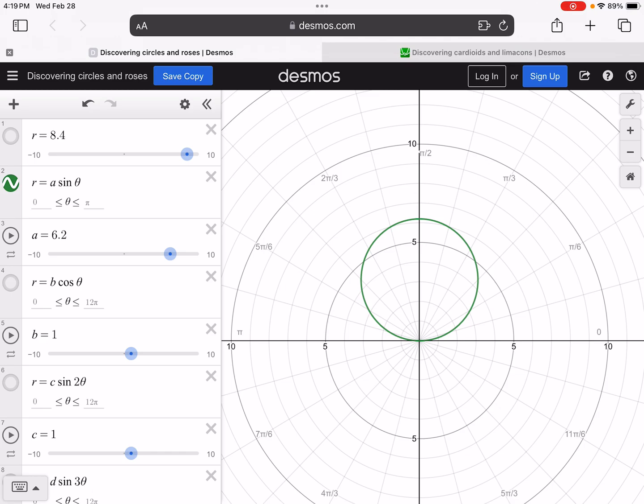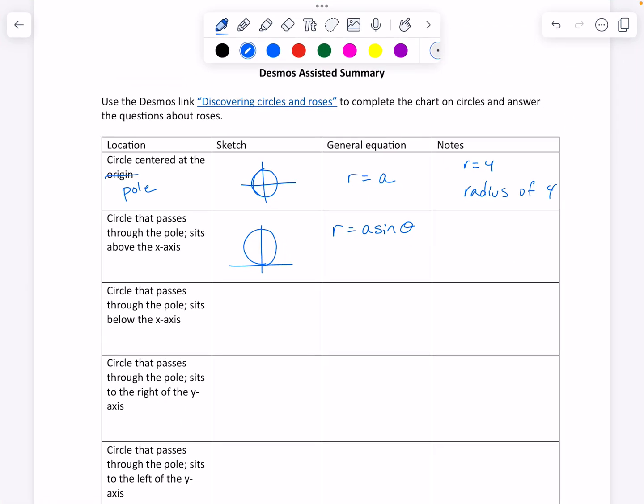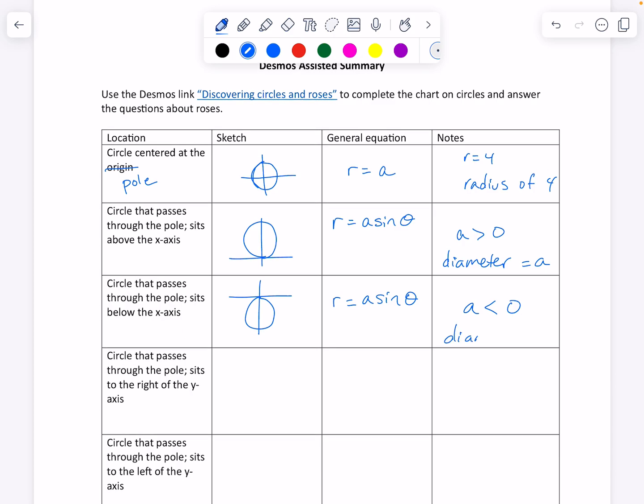Is that what they just asked me? A circle that passes through the pole sits above the x-axis. Okay, so what did we look like? We looked something like... Okay, pretend I can draw a circle. And this general form would be r is equal to a... I think that was just sine theta. Yes, sine of theta. And the a is actually the diameter of the circle.